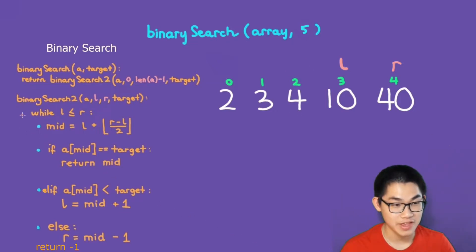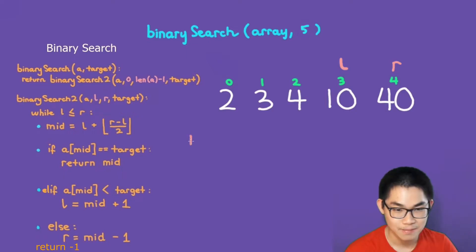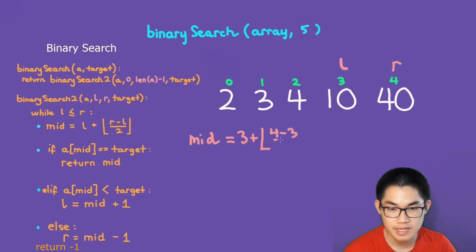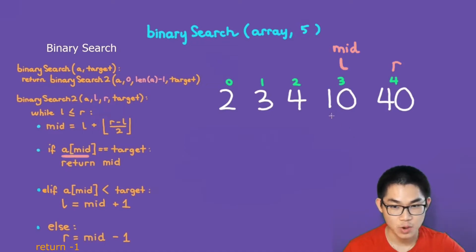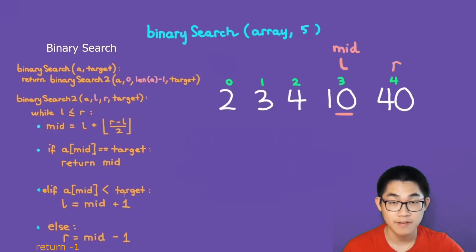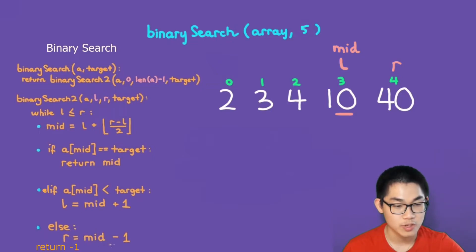We are back to the top. Is left smaller or equal to right? Yes. We calculate mid: L is 3, plus floor of (4 minus 3) over 2, giving us 3 plus 1 over 2, which is just 3. We put mid at index 3. Array at mid is number 10. Is 10 equal to 5? No. Is 10 smaller than 5? No. So we reach the else case: 10 is larger than 5, so we move R to the left of mid.